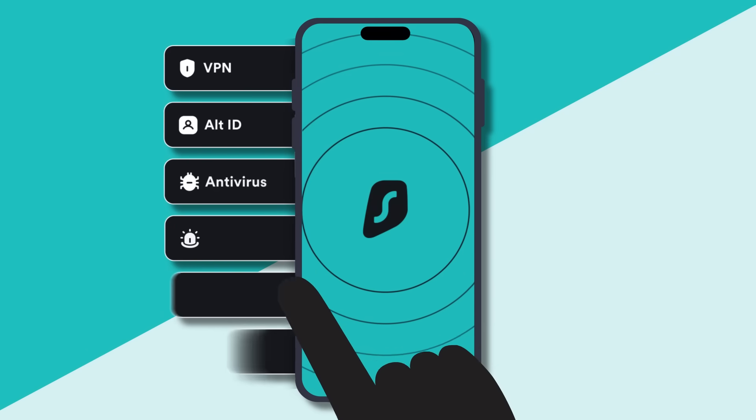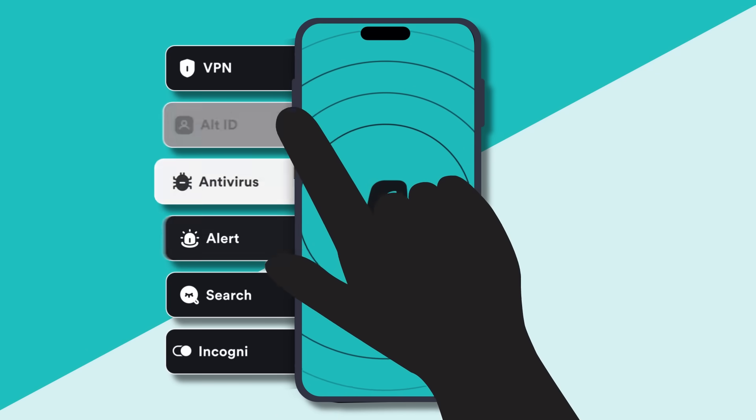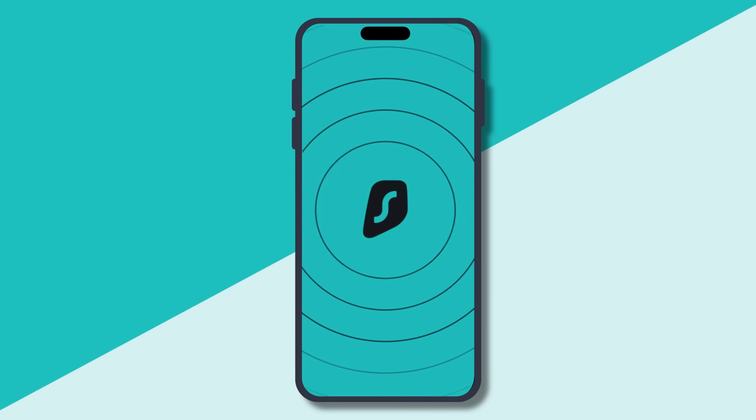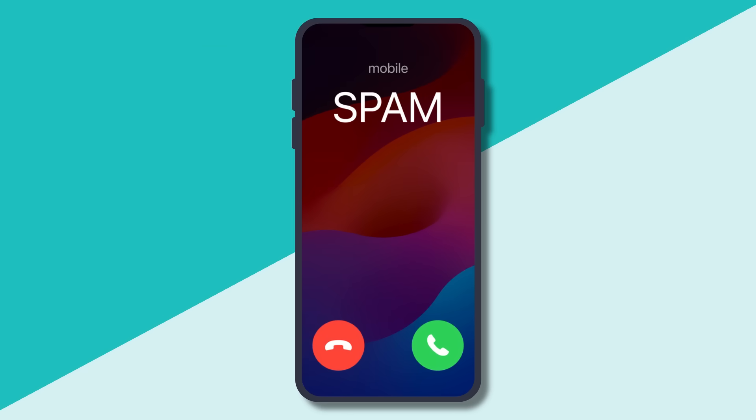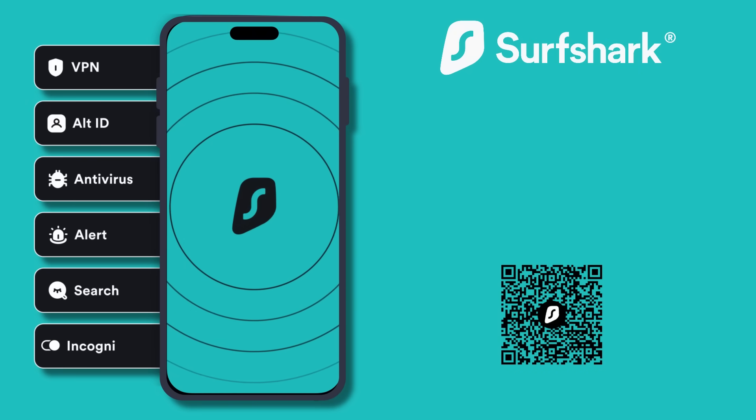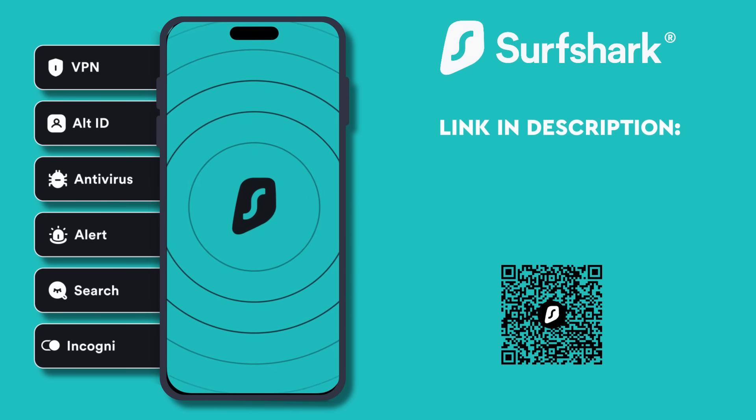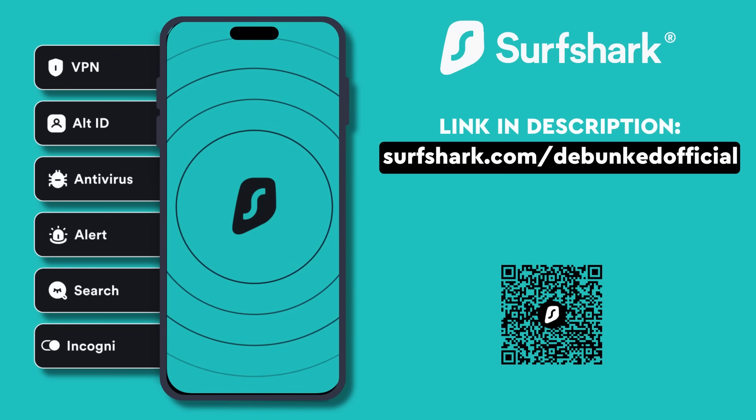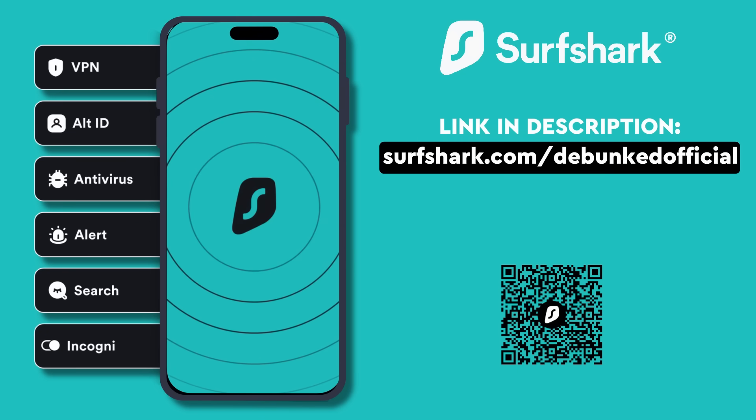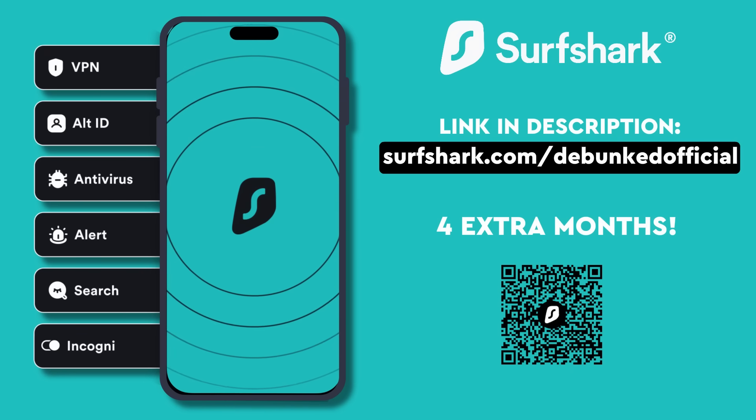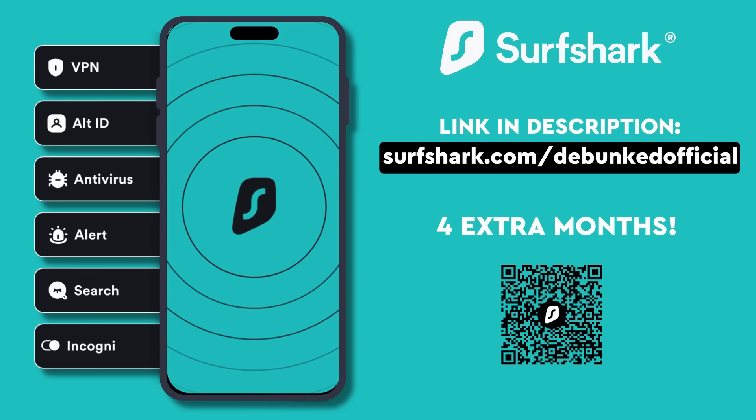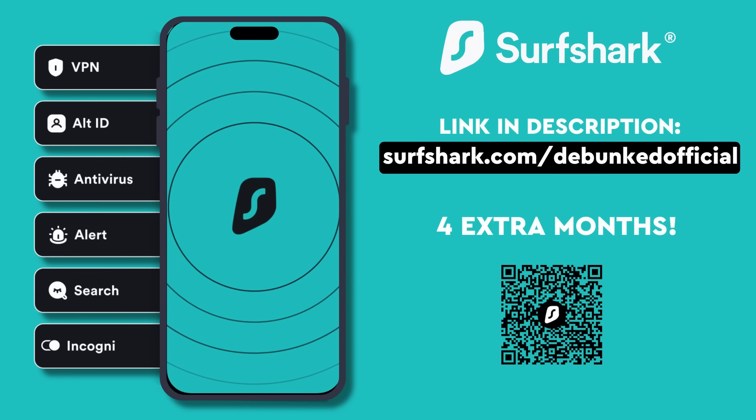And while we're at it, let's take advantage of the Incogni feature to get our personal data removed from data broker lists and stop our information being sold. Nice. If you'd like to take advantage of all this too, try out Surfshark by clicking on my link in the description, surfshark.com forward slash debunked official, and get yourself four extra months on top of the annual subscription. Right. Now let's find out how our hero stick is getting on up top.